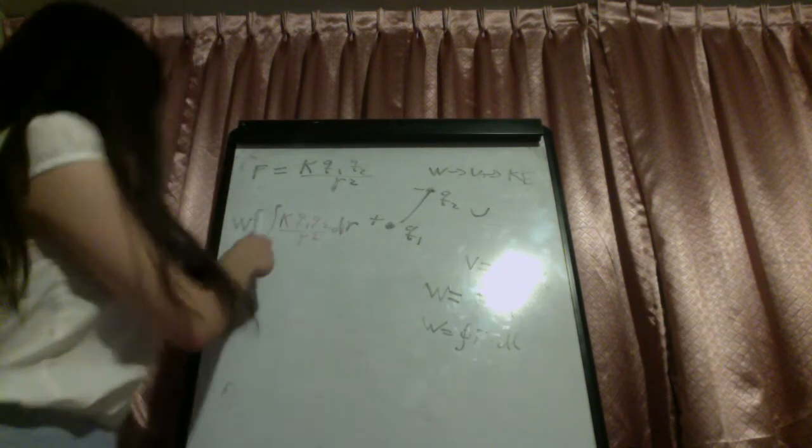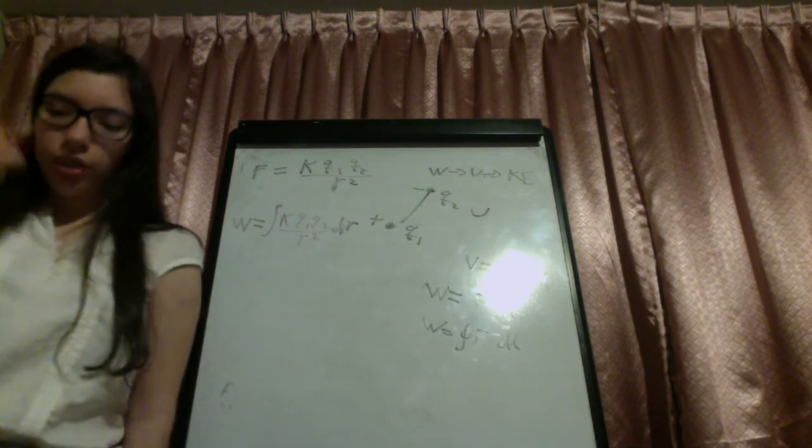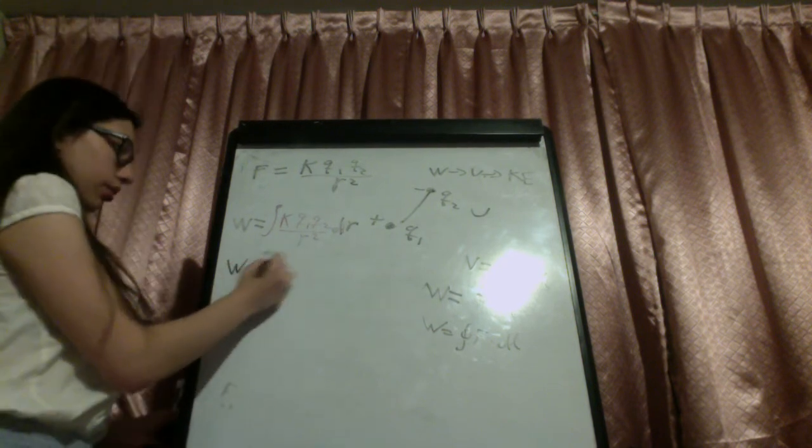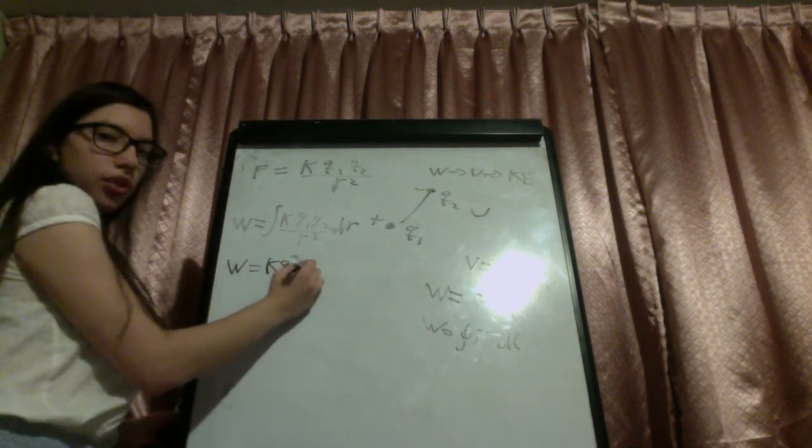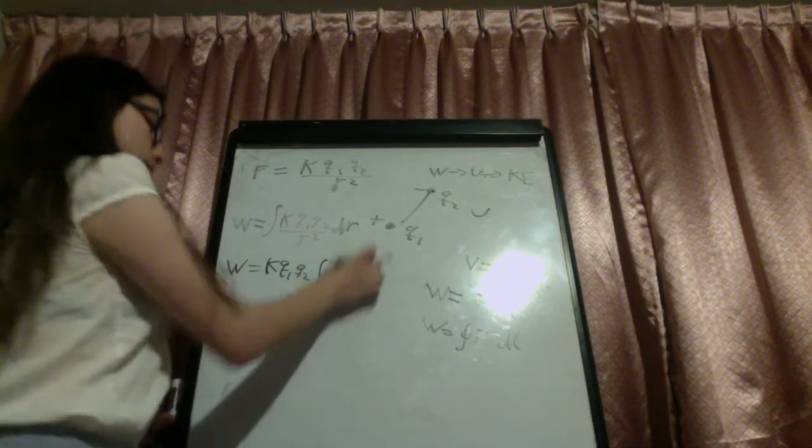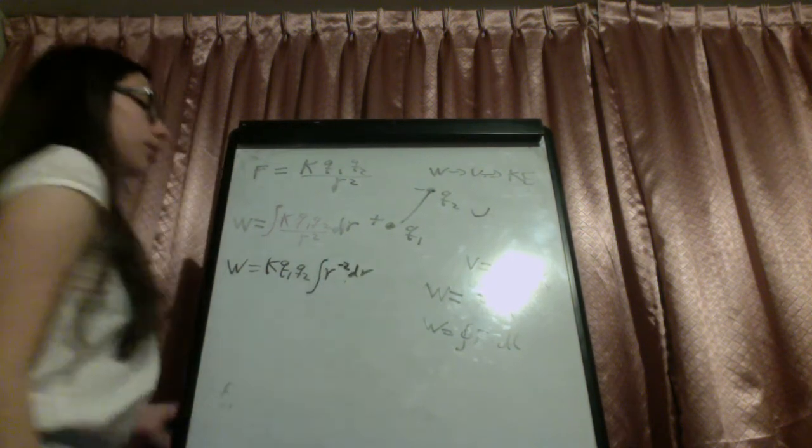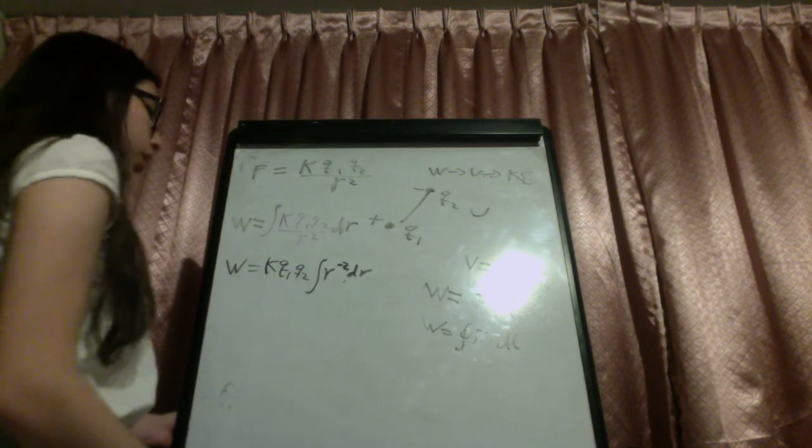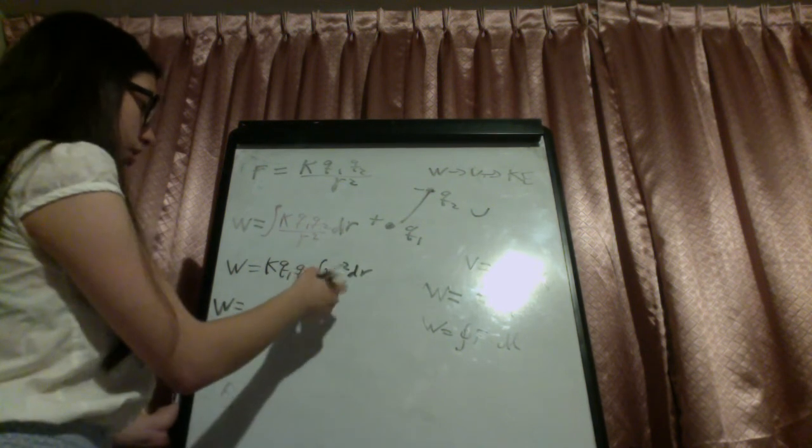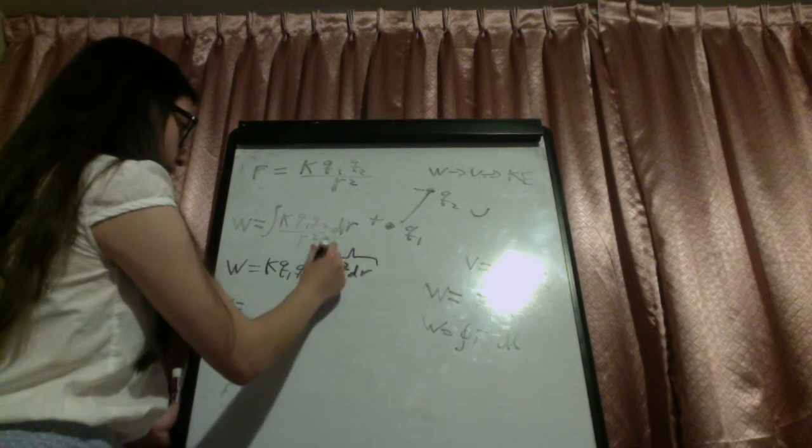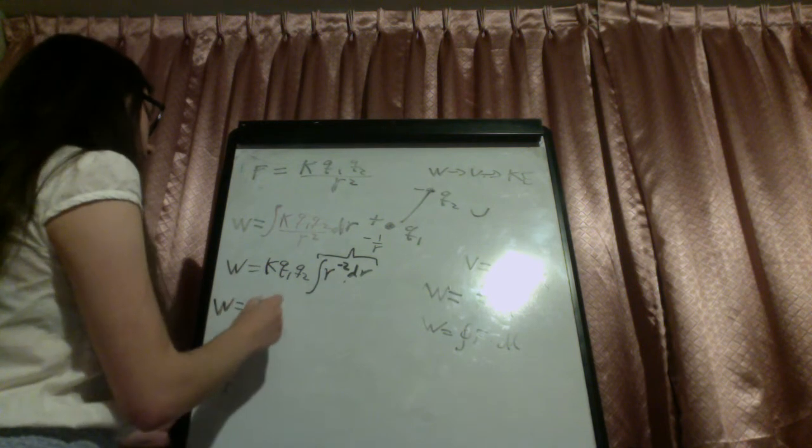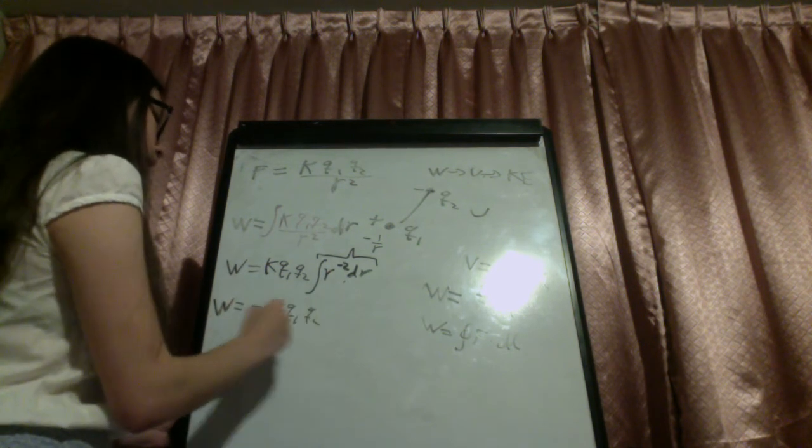So actually we have that K and Q1 and Q2 are just constants, so we can just take them out of the integral and write it as work is equal to Coulomb's constant times Q1 times Q2 times the integral of 1 over R squared dR. 1 over R squared is the same as R to the negative second power. So this would be that the work is equal to the integral of this is just minus 1 over R, negative 1 over R. So I have that the work is equal to the negative of Coulomb's constant times Q1 times Q2 divided by R.